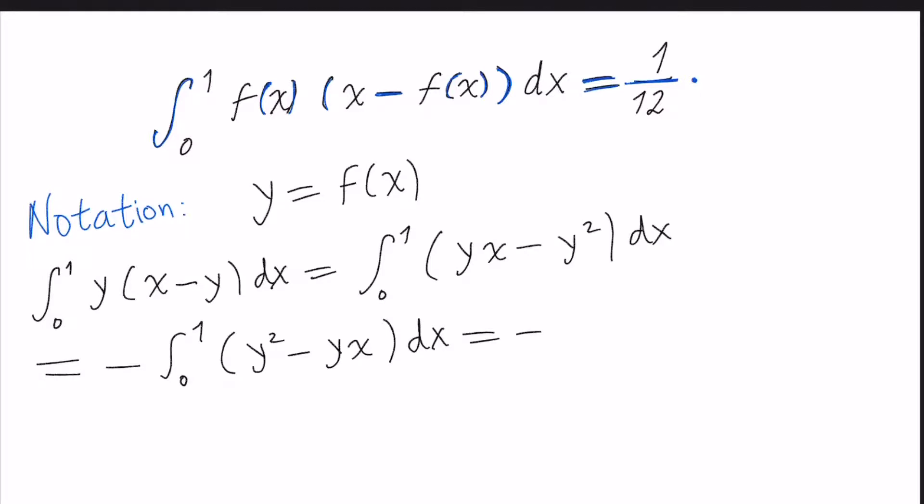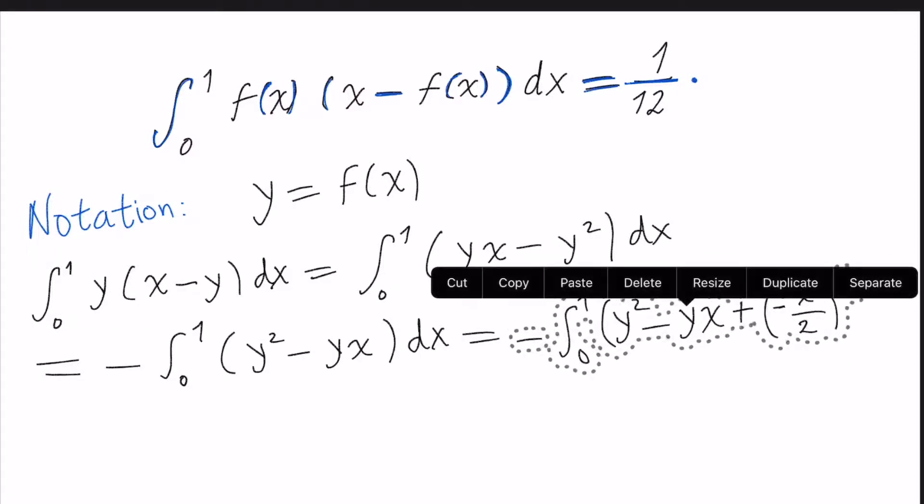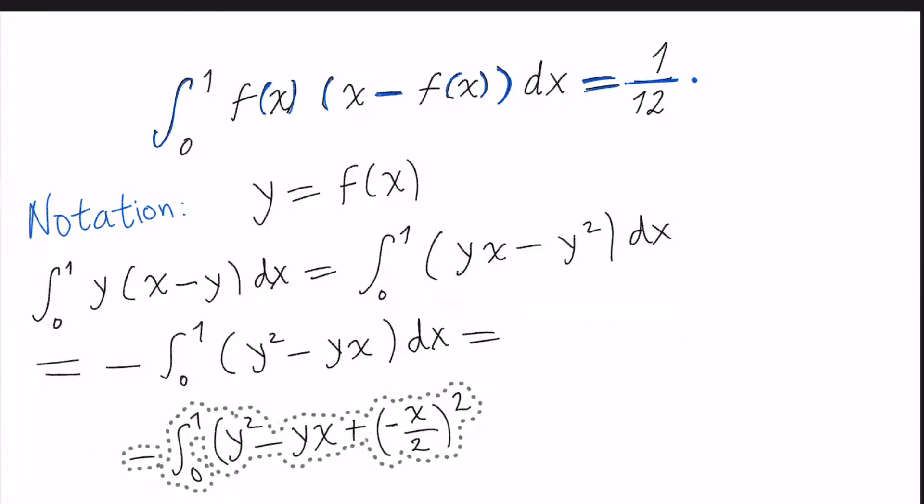Now the next step is, remember the same as we used to do when we complete squares, we just add the term that is multiplying the y, in this case minus x, and divide by 2 and square. Also, we will put exactly this term. Equal to minus, minus x divided by 2 squared, dx.